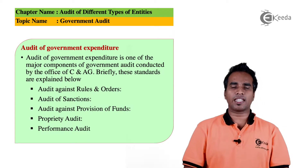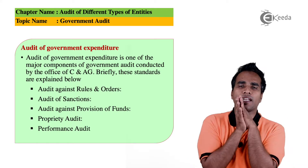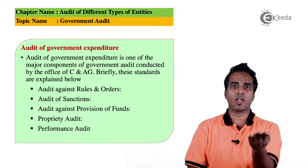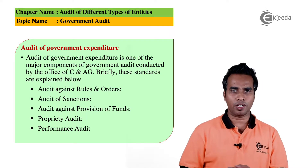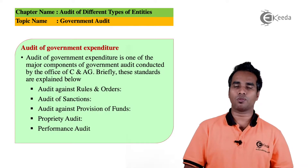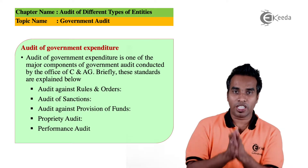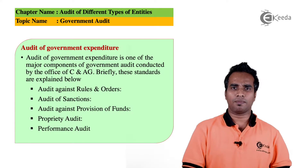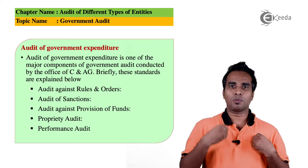Next point: Audit against the Provision of Funds — checking that expenditure is within the funds provided. Then we have Proprietary Audit. What is the meaning of a proprietary audit? Simply, it is about understanding the money itself.